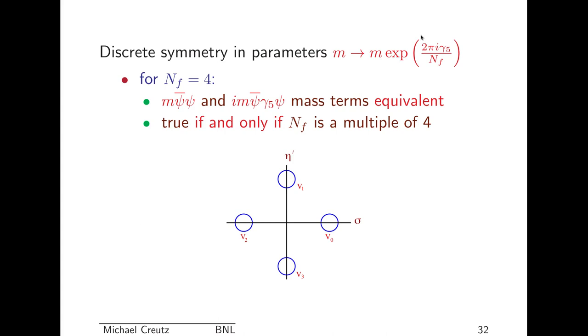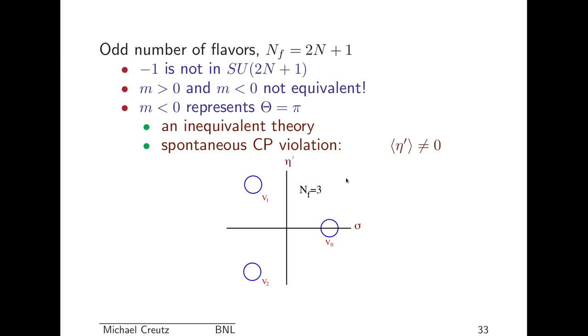Furthermore, there's a discrete symmetry in the mass parameter. If I take the mass and tilt it at some funny angle, if I make that angle be a multiple of 1 over N_f, you get an equivalent theory. So, for four flavors, I could consider M psi bar psi as a mass term, or I could just as well consider i M psi bar gamma 5 psi as a mass term. And they'll be completely equivalent in terms of the physics. However, this equivalence is true if and only if N_f is a multiple of 4, because that's when we get the 4-fold symmetry.